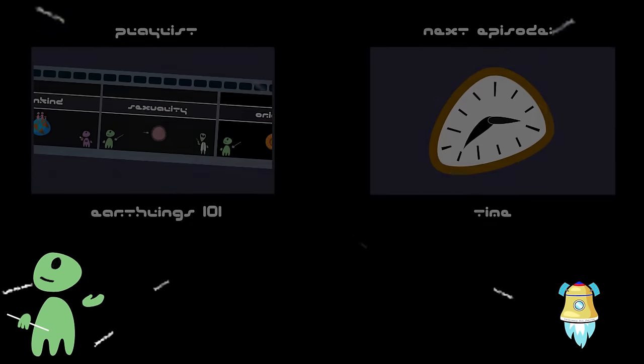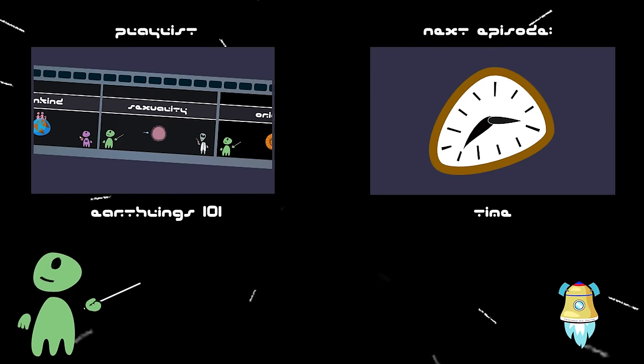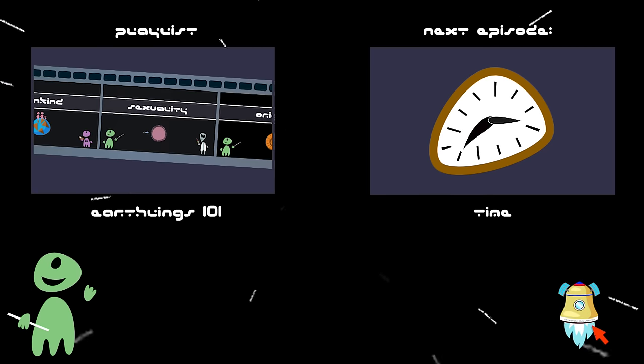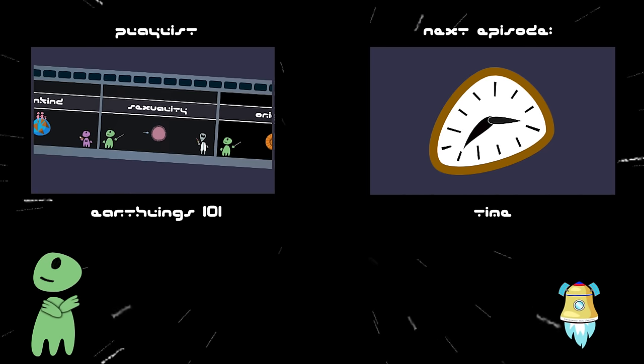This was the 18th episode of Earthlings 101. In the next episode, we will learn about time. What is time? How does Earthlings' perception of time differ from yours or mine? Why do they feel that time can speed up or slow down? And how do they measure it? So long, like, subscribe, and don't forget to be alien.